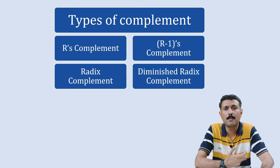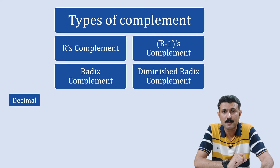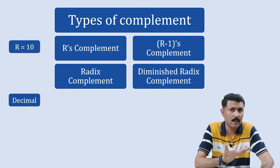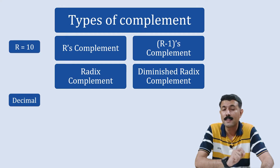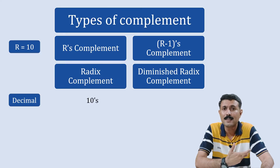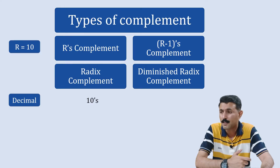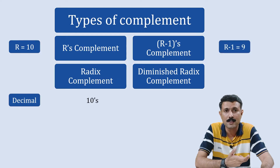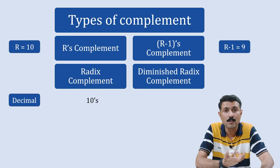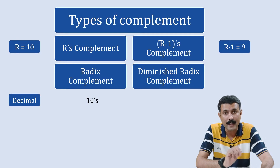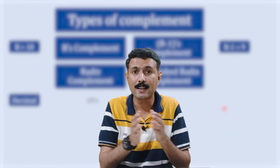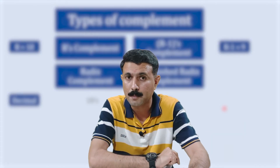For example, in the decimal number system the radix is 10. So if r equals 10, then r's complement is called 10's complement. For r-1's complement, r-1 gives us 10 minus 1, which is 9 — so it is called 9's complement. That is why we get 10's and 9's complement in the decimal number system.